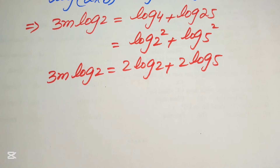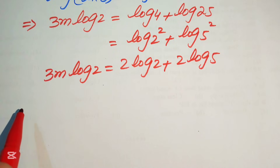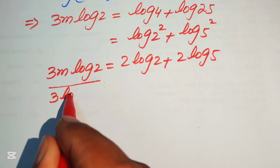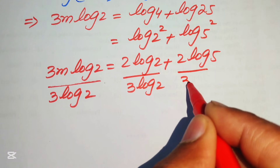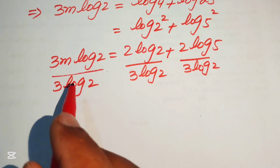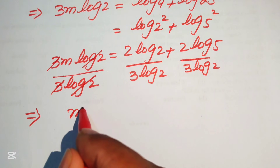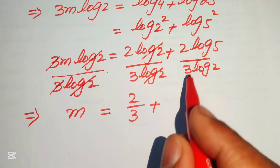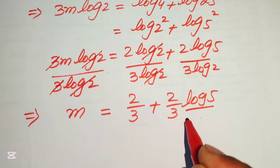In the next step, we divide both sides by 3 log 2. On the left, 3 log 2 cancels with 3 log 2, leaving m. On the right, each term is divided by 3 log 2: the log 2 in the first term cancels, and we get 2 over 3 plus 2 over 3 times log 5 divided by log 2.